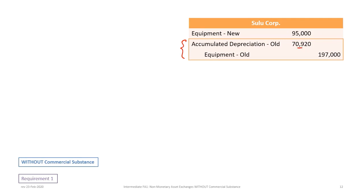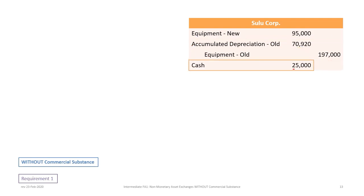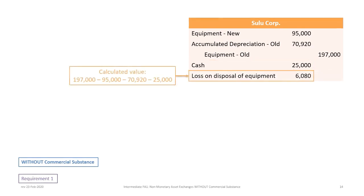The other parts of the journal entry are accumulated depreciation and the old equipment cost — similar to the Chekhov sequence. We can record accumulated depreciation, the equipment cost, and then the cash received. To make the journal entry balance, we need a plug value: a debit of $6,080, calculated as the $197,000 old equipment cost minus the fair value of the new equipment, minus $70,920 in accumulated depreciation, minus cash received. This results in a loss on disposal of equipment — not a loss on exchange — because the new asset has been adjusted to its fair value.